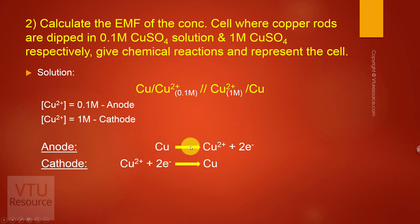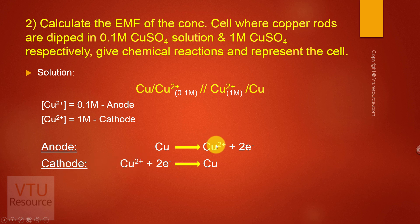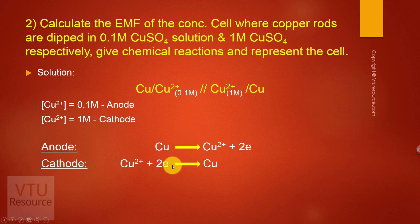The reactions are: at anode, copper undergoes oxidation to give Cu²⁺ and two electrons. At cathode, Cu²⁺ ions undergo reduction by accepting two electrons to give Cu. The net reaction is zero.